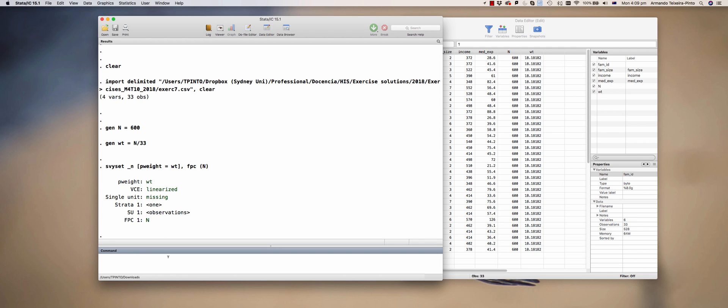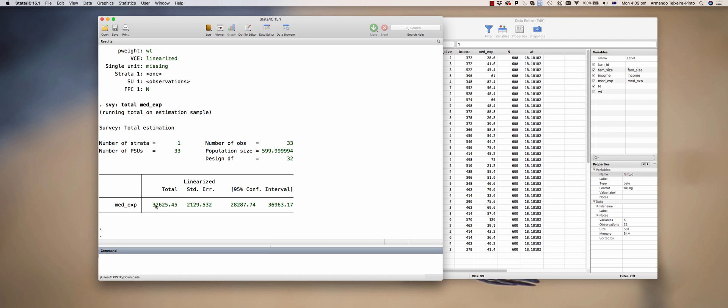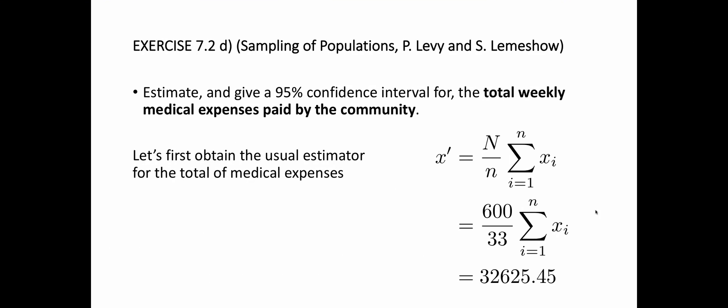Now Stata knows this is survey data, and I'm going to compute the total of medical expenses using the inflation estimator, basically asking for the total of medical expenses. As you can see, we obtained the value 32,625. Or if you prefer to do the formula, you get exactly the same thing. This should be straightforward.